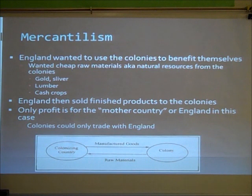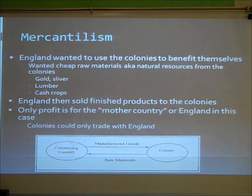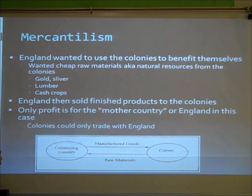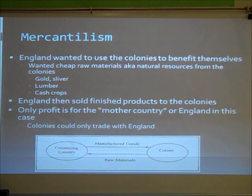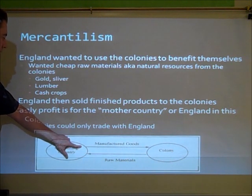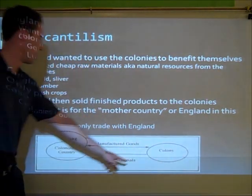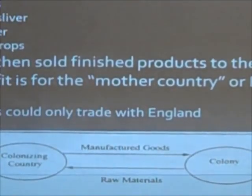Another cause of the revolution was mercantilism — when England wanted to use the colonies to benefit themselves. They wanted cheap raw materials, also known as natural resources, from the colonies: gold and silver, lumber, and cash crops like cotton. England then sold finished products back to the colonies, and only the mother country profited. The colonies could only trade with England — even if they could find cheaper products from France or Spain, they could not get those because they could only trade with the mother country.